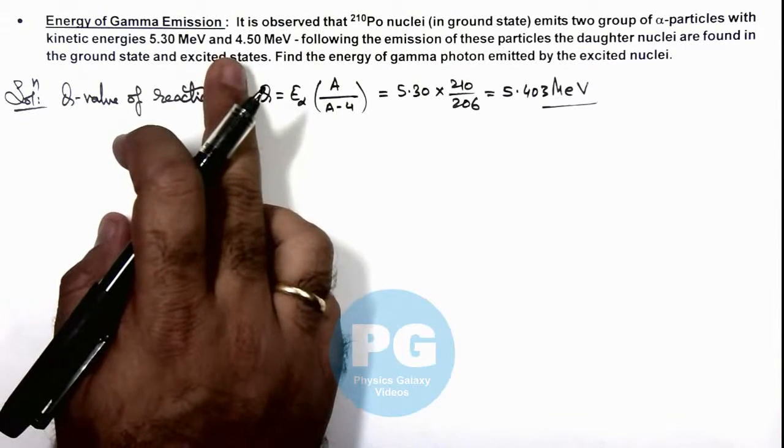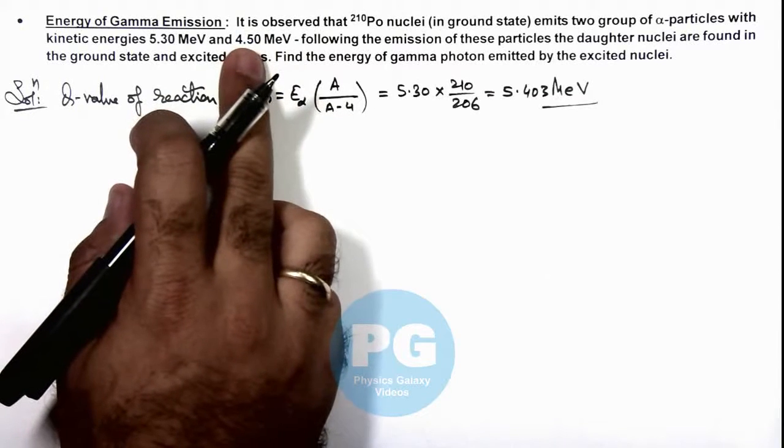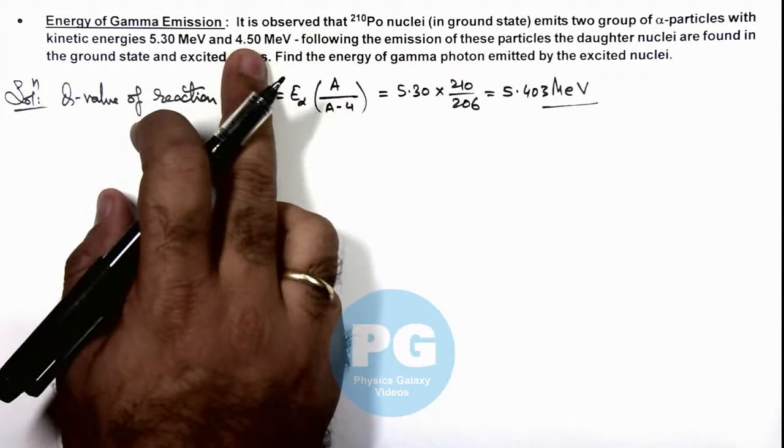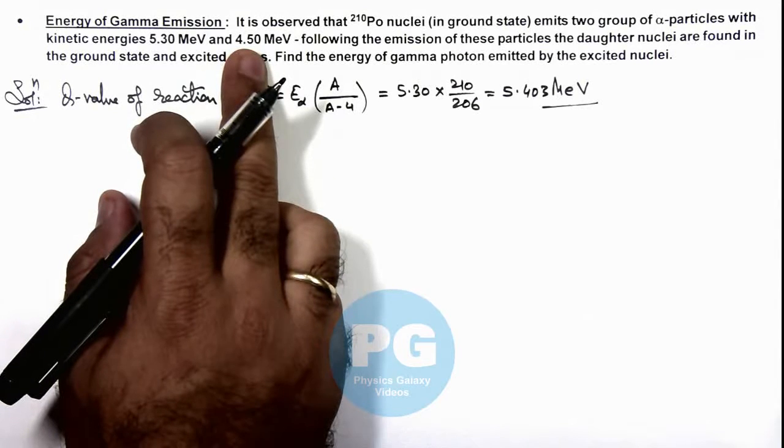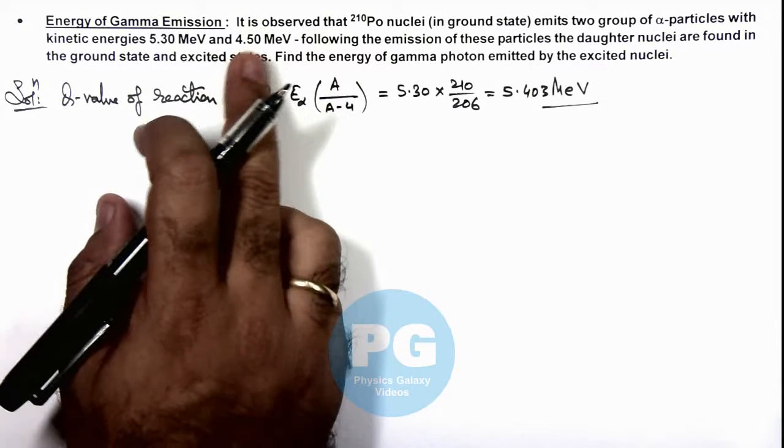In the second case, when 4.5 MeV energy of alpha is emitted, some energy is absorbed by the daughter nucleus and it is in excited state.